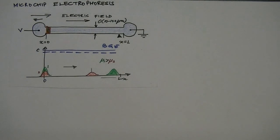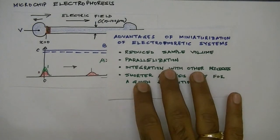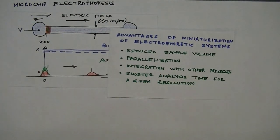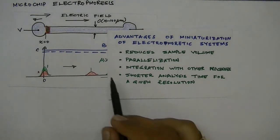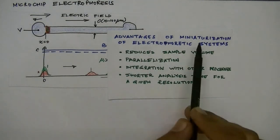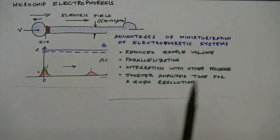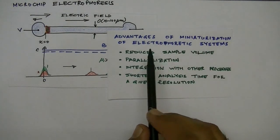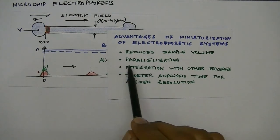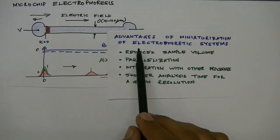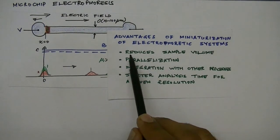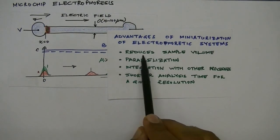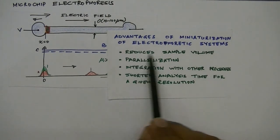There are advantages to miniaturization, and some of the advantages are common to any type of microfluidic system, while other advantages are particularly relevant to electrophoretic systems. The common advantages of a microfluidic system which are also applicable to this electrophoretic system are: when you reduce the size of your system you will need less volume.